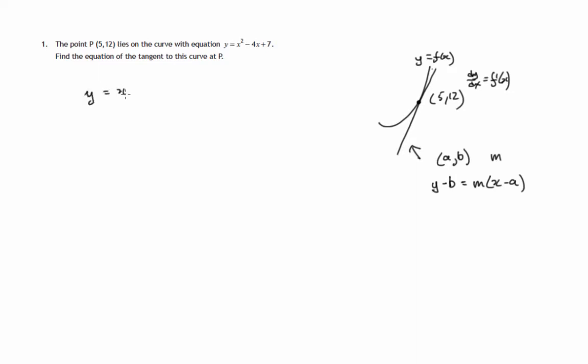We've got y equals x² minus 4x plus 7. If we differentiate that, we get 2x minus 4. And then at the particular point we're after, we know x is 5. So when x is 5, the gradient dy/dx is equal to 2 times 5 minus 4. That's 10 minus 4, which is 6.